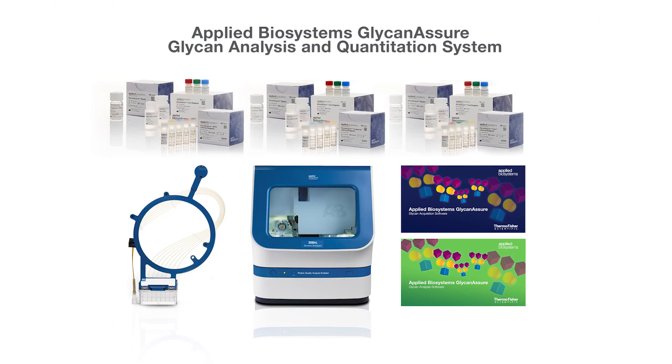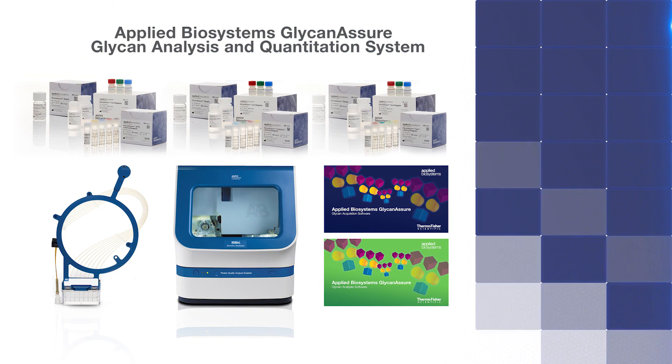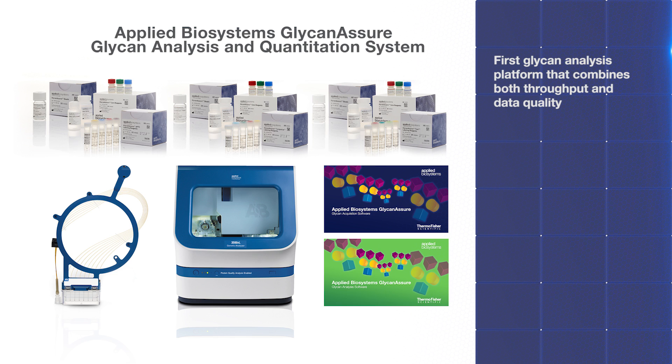The Applied Biosystems Glycan Assure Glycan Analysis and Quantitation System is the first glycan analysis platform that combines both high-throughput and high data quality and offers an integrated glycan analysis platform that helps save labor, time, and cost of analysis.